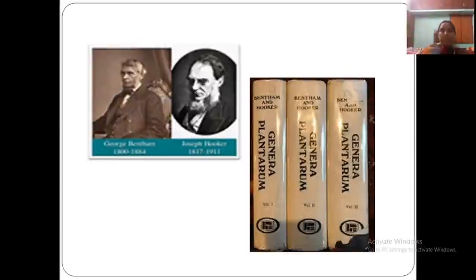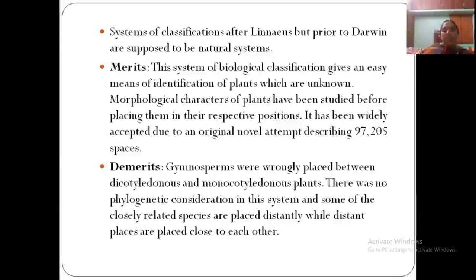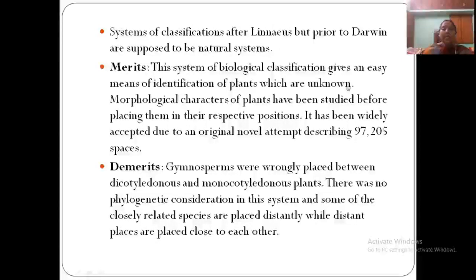Bentham and Hooker — George Bentham and Joseph Hooker — published their work in Genera Plantarum. Linnaeus's book is Species Plantarum; Bentham and Hooker's book is Genera Plantarum. Systems of classification before Darwin are natural systems. The merits of the natural system include that description is based on several characters and that it is a widely accepted classification.